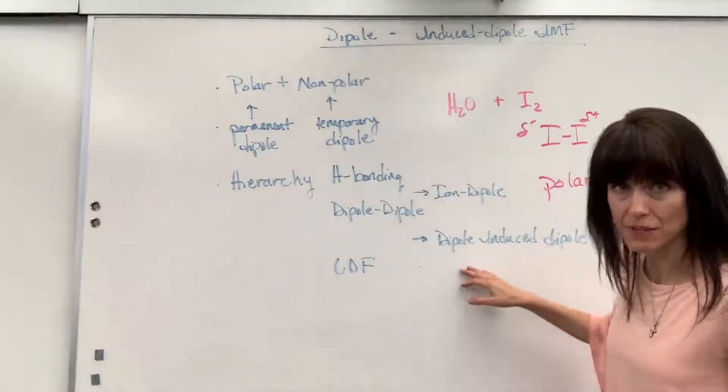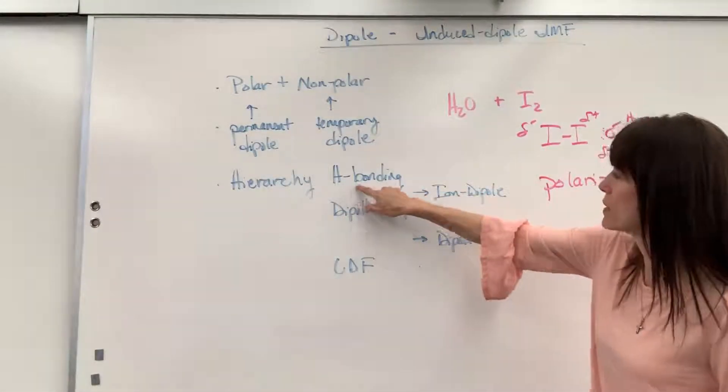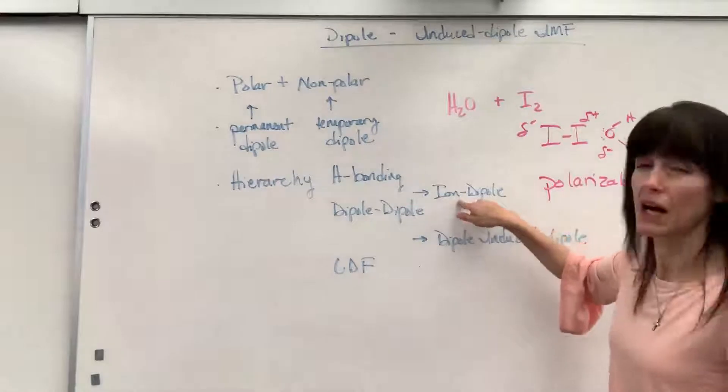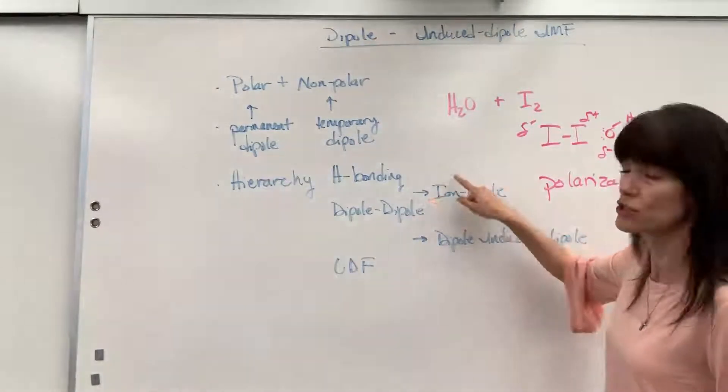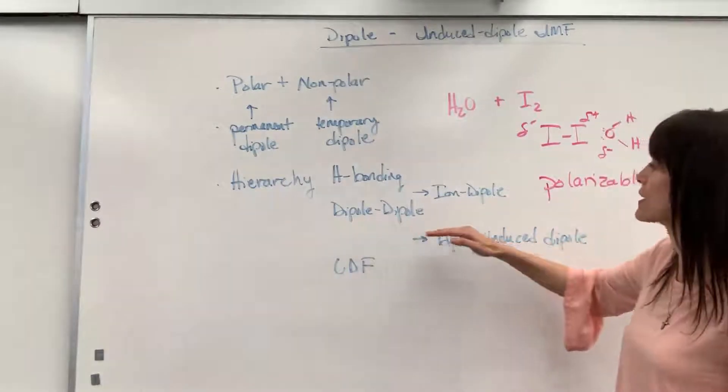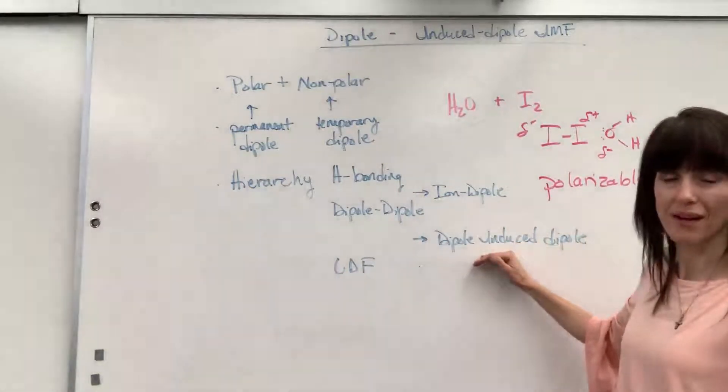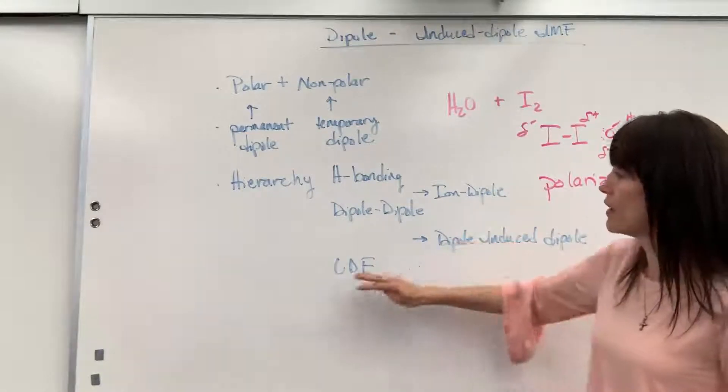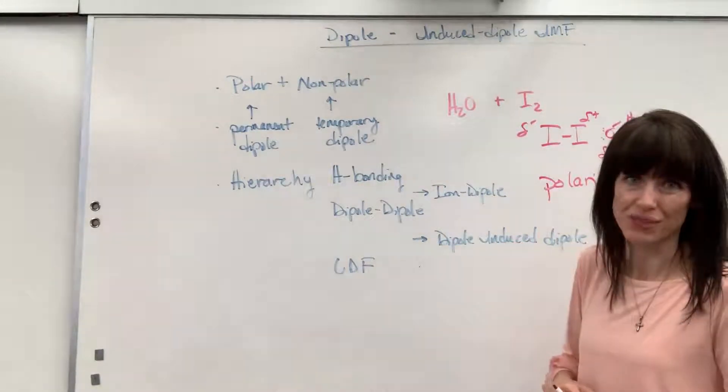But then here are two more types of mixtures. So hydrogen bonding, and then the next strongest would be ion dipole because that's a full-on charge instead of just a partial. And then dipole-dipole, and the next one is dipole-induced dipole, is actually stronger than the London dispersion forces.